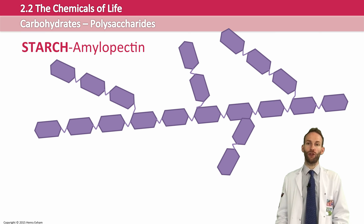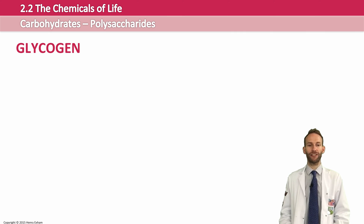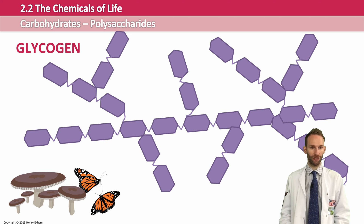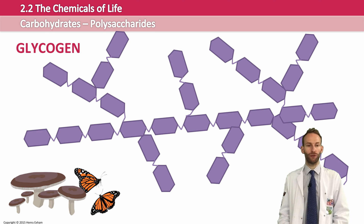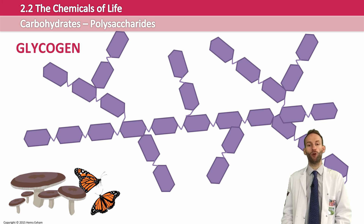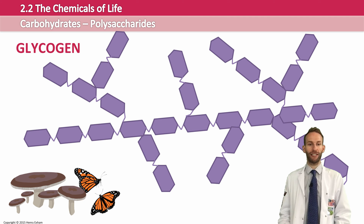Animal cells do not store their glucose as starch — they store it as glycogen instead. Glycogen has quite a similar structure to amylopectin in starch: it's made of many alpha glucose molecules with a combination of 1,4 and 1,6 glycosidic bonds. It's basically the same as amylopectin but with a lot more branching. It is used by animals, but also by fungi as well.